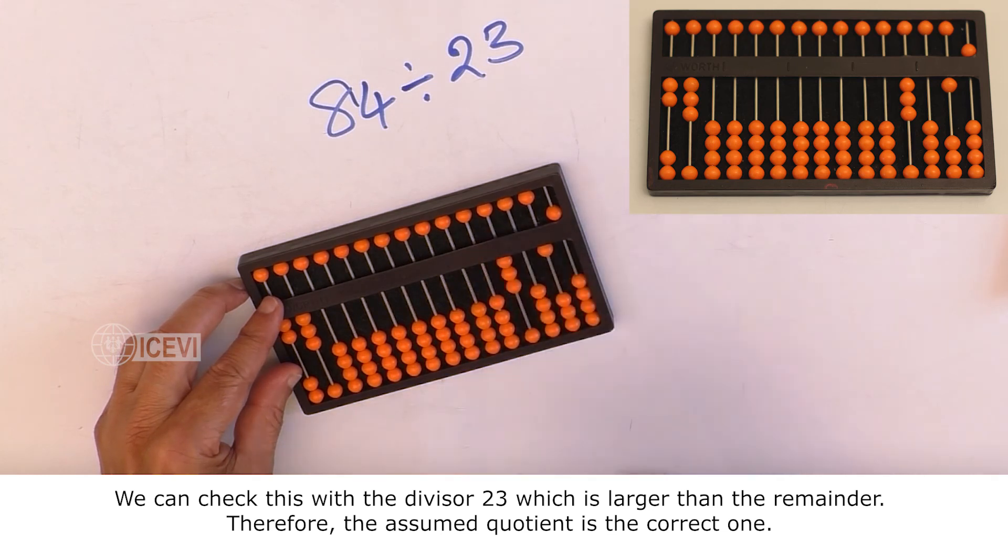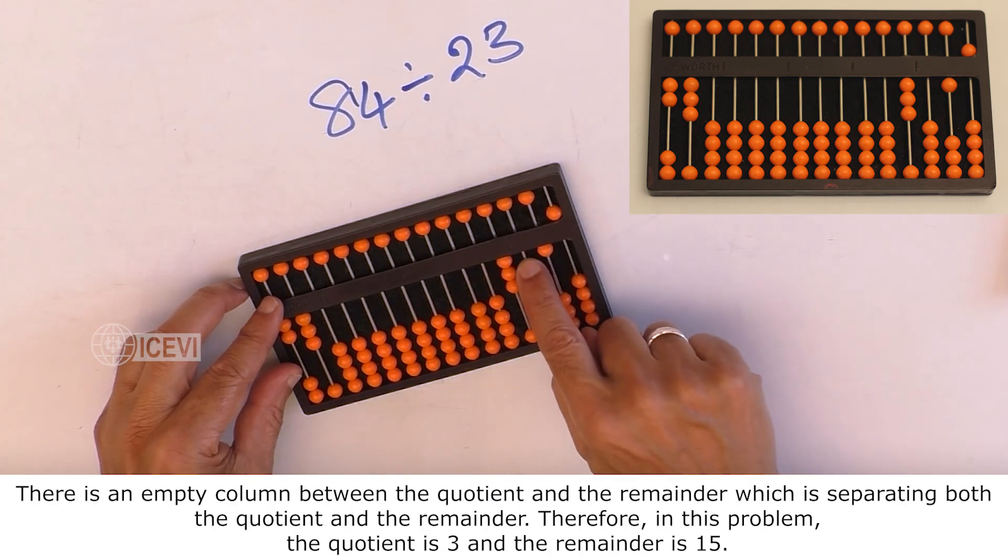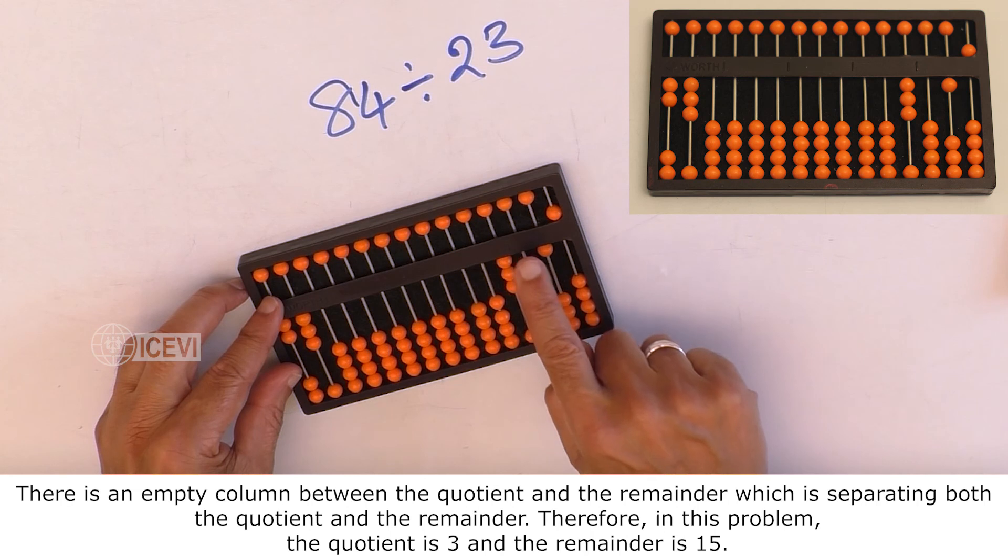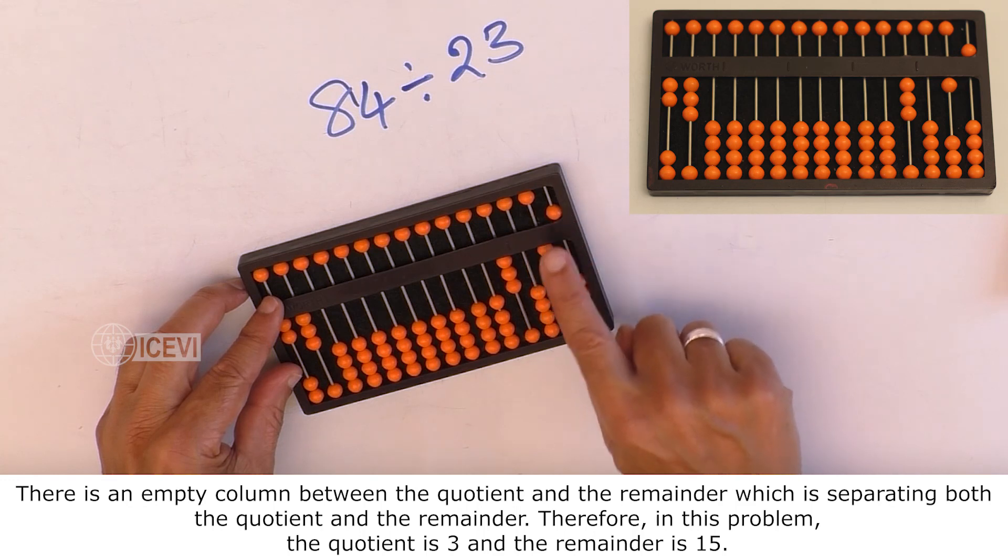There is an empty column between the quotient and the remainder which is separating both the quotient and the remainder. Therefore, in this problem, the quotient is 3 and the remainder is 15.